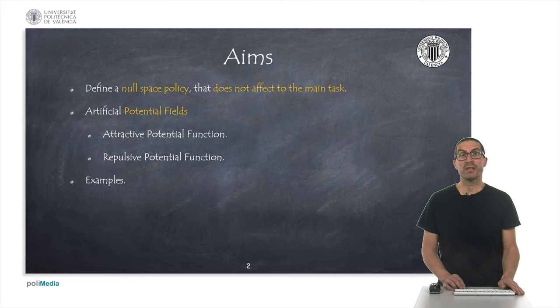This method defines an attractive potential function and a repulsive potential function. The attractive function allows us to tend towards a certain configuration, and the repulsive function prevents us from approaching some configurations. We will see these ideas through a series of examples.